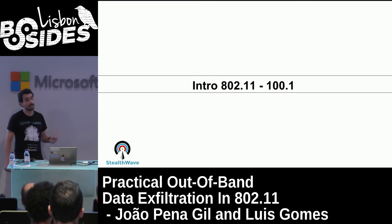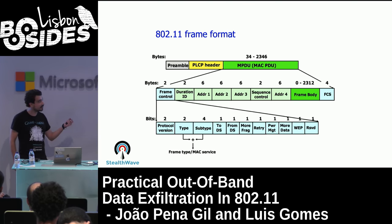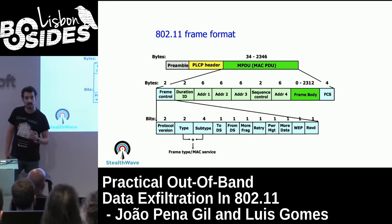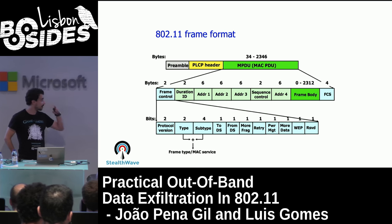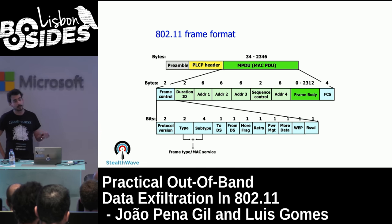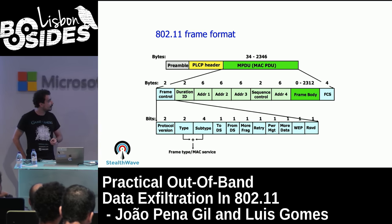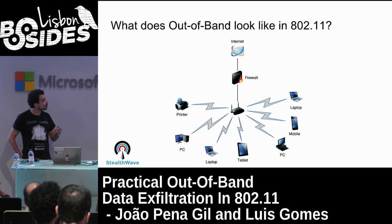802.11 has several frame types. The type and subtype fields dictate what kind of frame it is — control frames, data frames, and management frames. What prior art in out-of-band data exfiltration through 802.11 has done is grab one of these many fields and try to manipulate them — inserting data where it won't be used or checked.